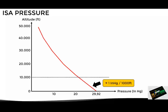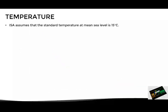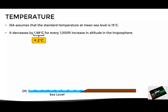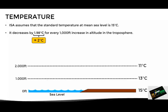Now that we have seen how pressure behaves, let's take a look at the temperature in the ISA model. The temperature is assumed to be 15 degrees Celsius at sea level, and it is reduced by 1.98 degrees Celsius for each 1000 feet of altitude increase within the troposphere, which can be rounded up to 2 degrees Celsius per 1000 feet. This means that under standard conditions at sea level we would have 15 degrees Celsius, at 1000 feet 13 degrees Celsius, at 2000 feet 11 degrees Celsius, and so on.